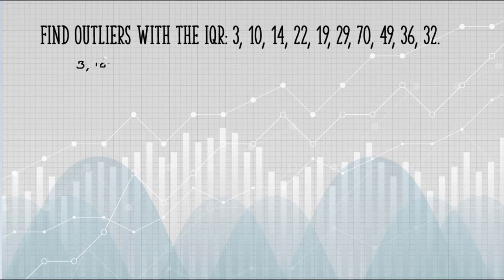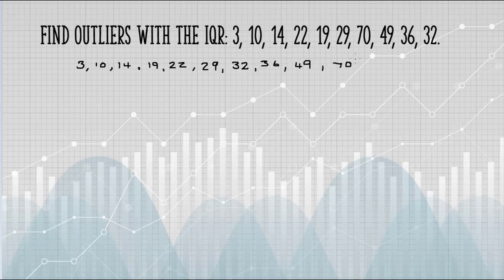The first step is to order the numbers from smallest to largest. Next, we need to find Q1. Q1 is the first quartile. Split your data set right down the middle.